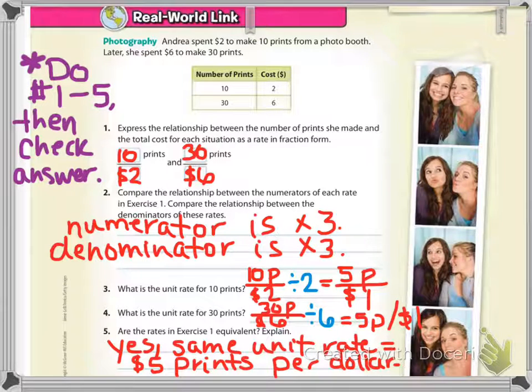All right, check question 2. Numerator and denominator are multiplied by 3.